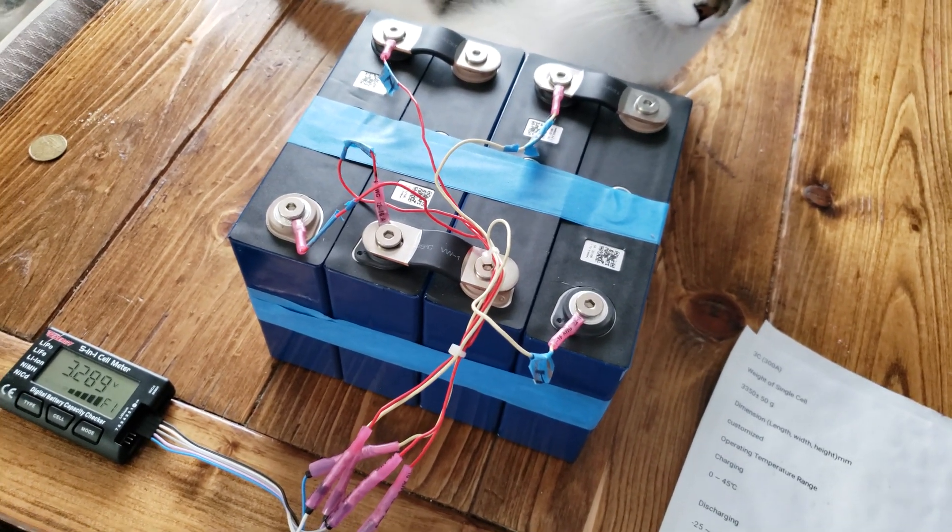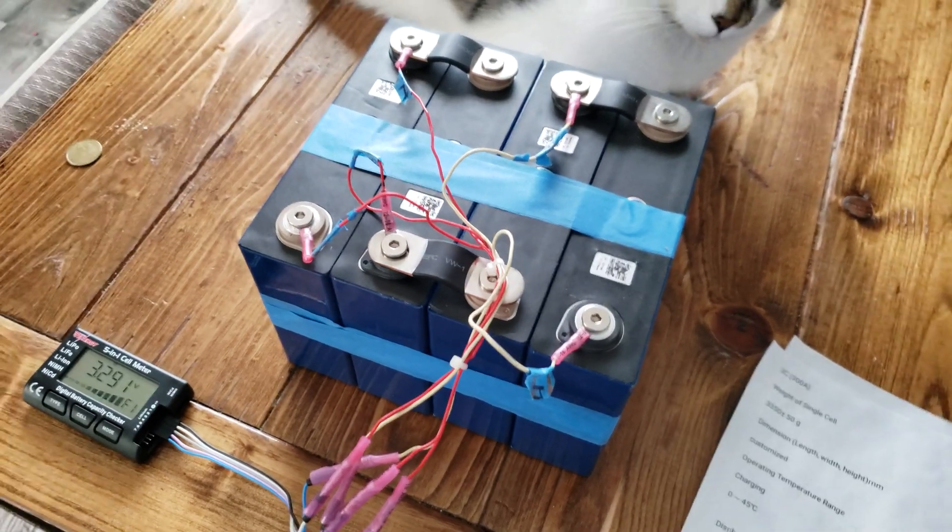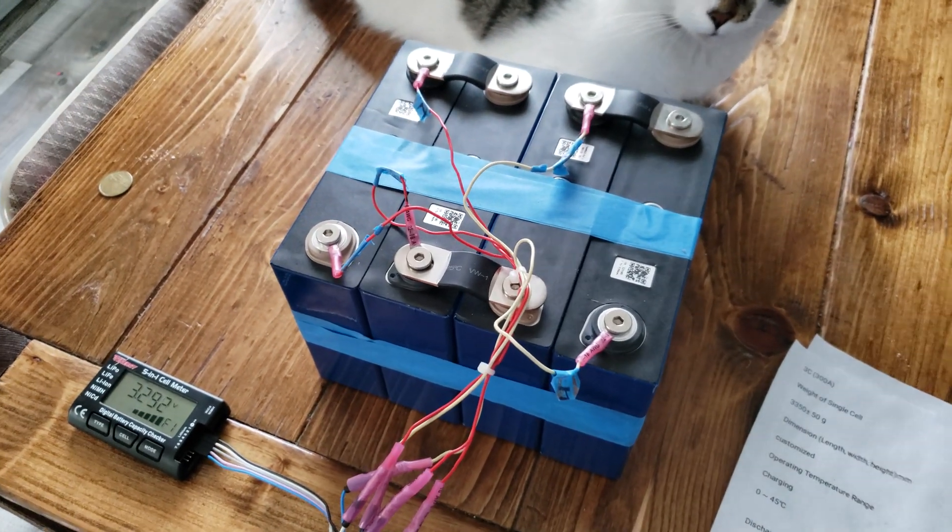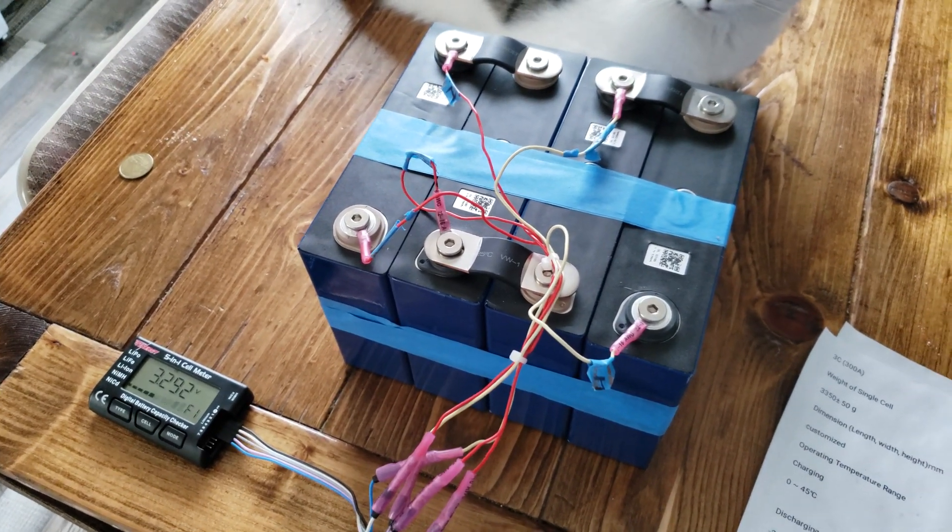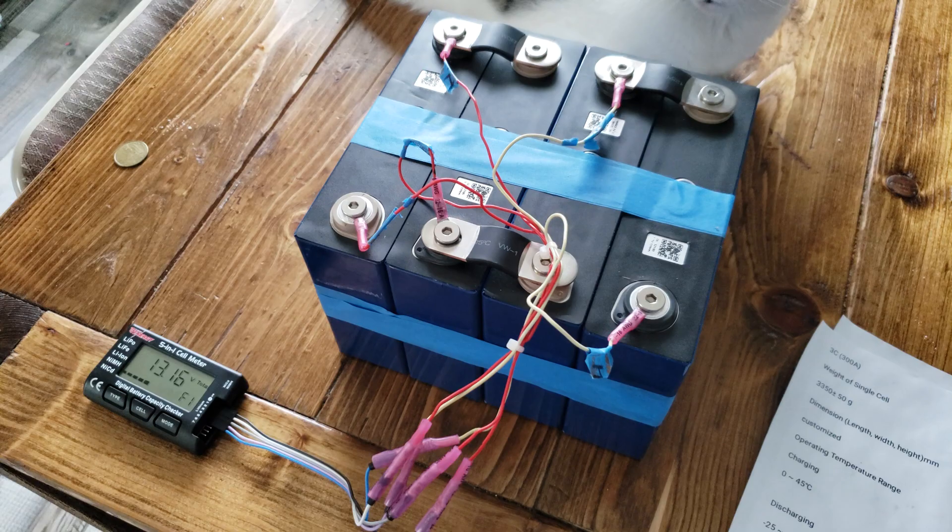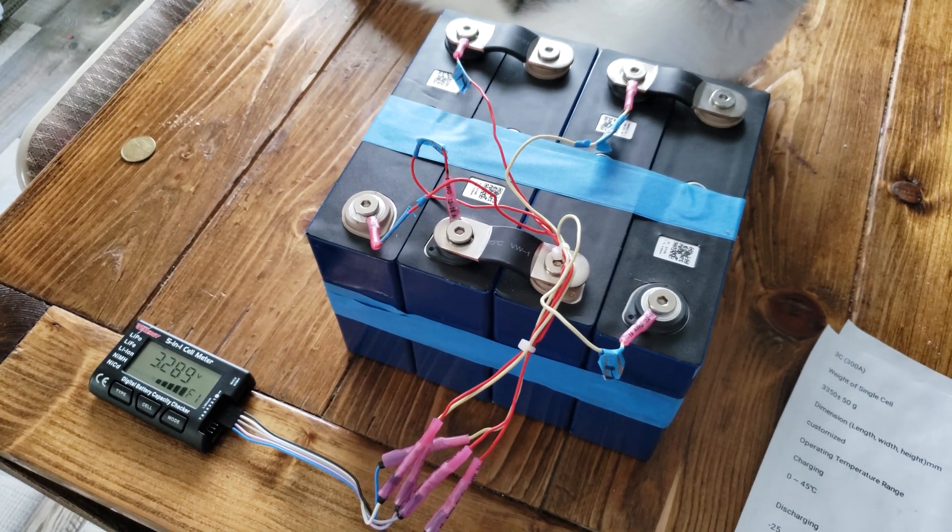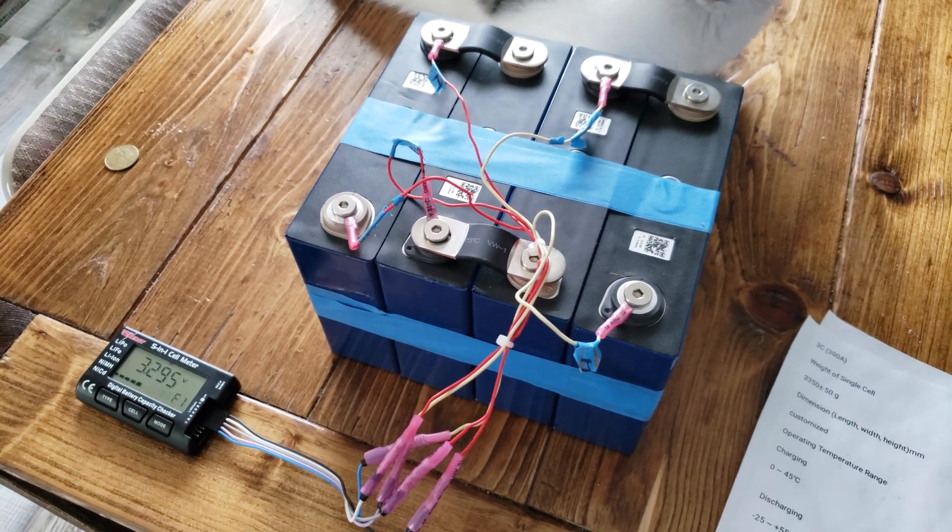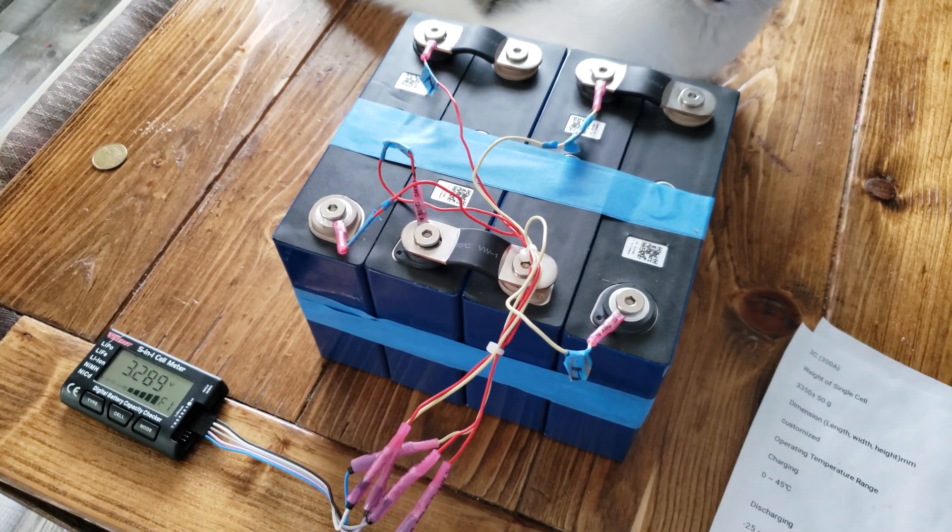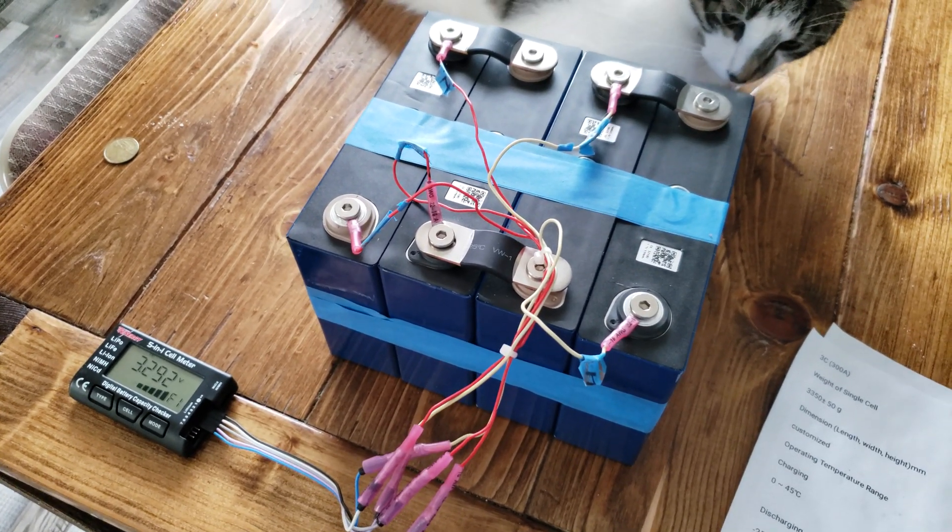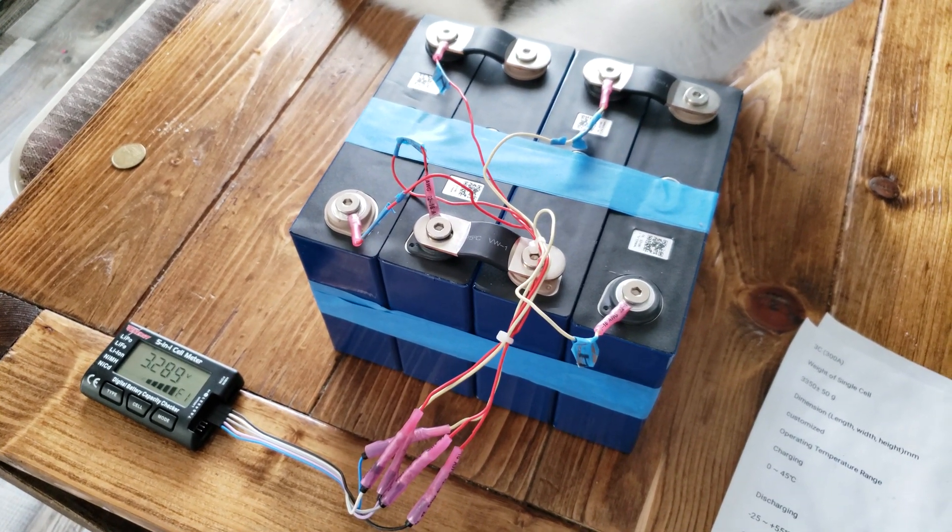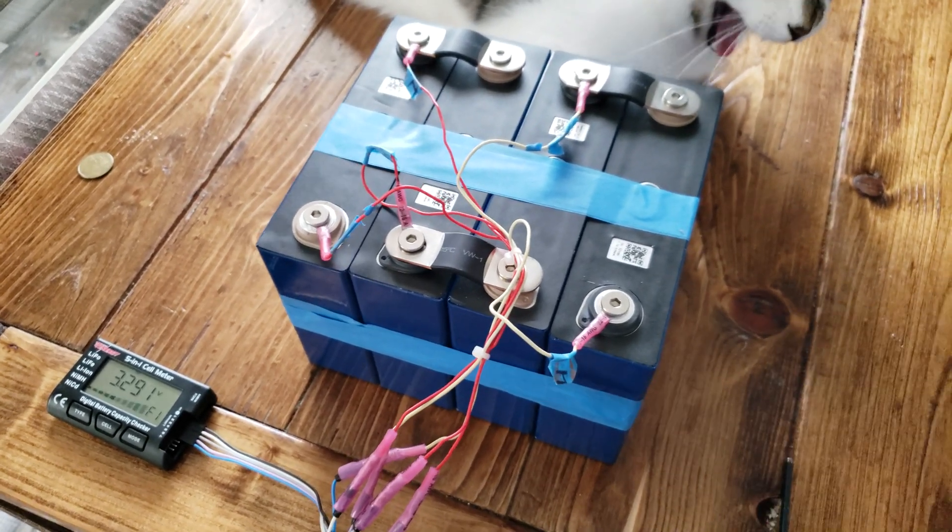The cycle life at 90% discharge is 2,000 cycles or greater. I'll probably only be doing about 70% discharge, so basically taking 70% of the battery out. Self-discharge rate per month is less than 3%.